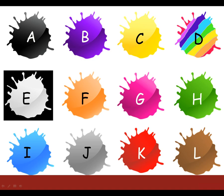So number 1, rosa. Which colour is that? Write down its letter. Number 2, blanco. Number 3, rojo. Number 4, negro. Number 5, gris.